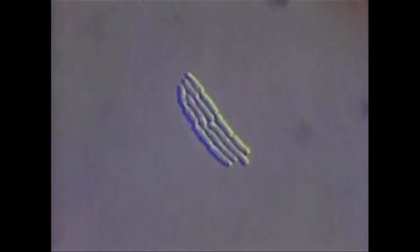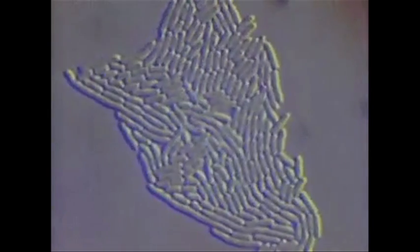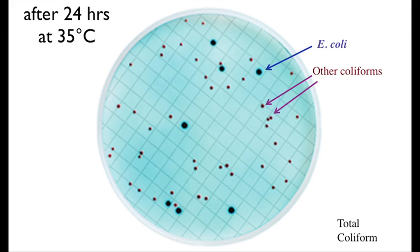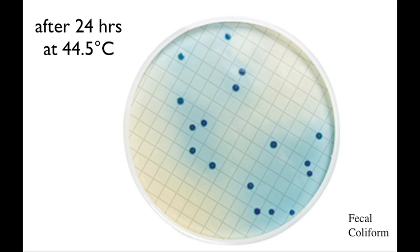After an incubation period during which bacterial cells grow and multiply in a nutrient medium, the resulting colonies appear blue or red with a metallic sheen for the total coliform bacteria and dark blue for the fecal coliform bacteria. The color arises from the interaction of a metabolite of lactose that reacts with a dye that is in the culture medium.